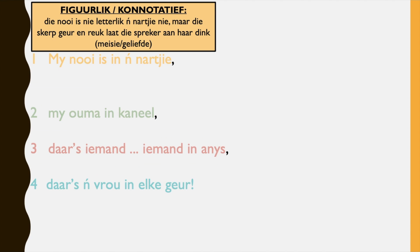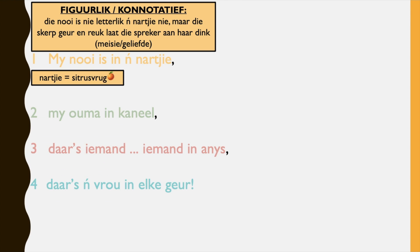So the first stanza — 'My nooi is in 'n narkie' translates to 'my girlfriend is in a narkie.' It's vergierlik, figurative — die nooi is nie letterlik in 'n narkie nie, maar die skerp geur en reuk herinner die spreker aan die ding. So the girlfriend isn't literally in a narkie, but basically the strong scent, the aroma, the flavor of a narkie reminds the speaker of his girlfriend, his loved one. So narkie is 'n sitrusvrug — it's a citrus fruit. Also important: please remember to spell narkie with one A, not a double A — otherwise it will be a spelling mistake or an English word.